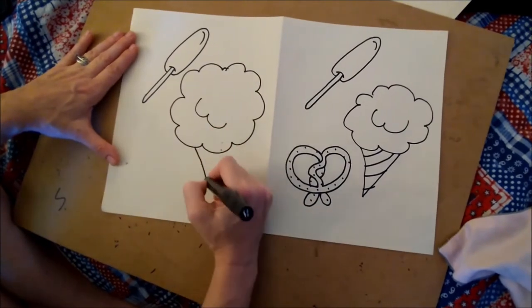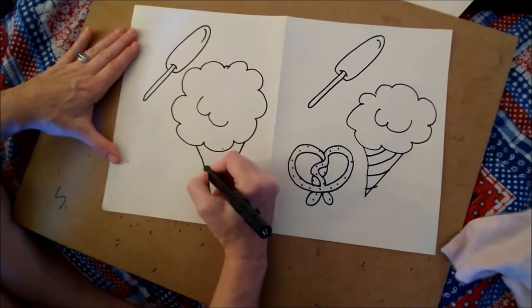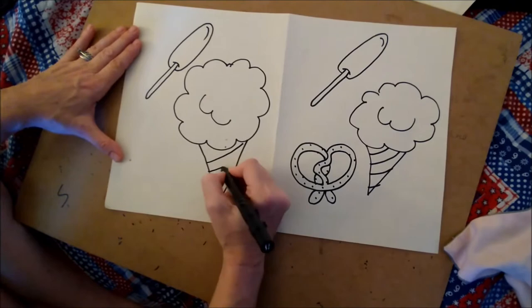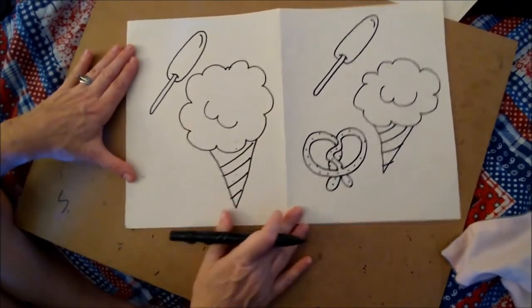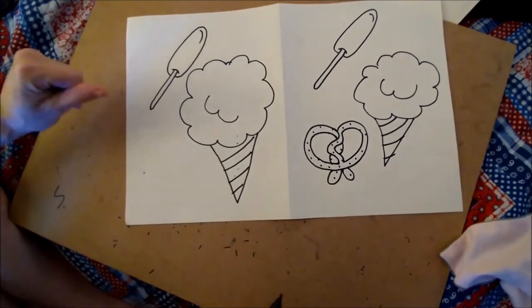And we're just going to do a triangle down here and just put some little stripes there. And the triangle for the cotton candy cone. And very last but not least we'll do our big salted pretzel.